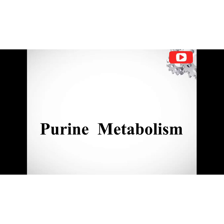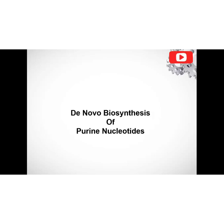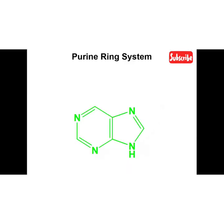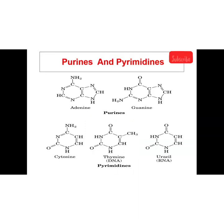Let's look at the biosynthesis of purine nucleotides via the de novo pathway. This is the core structure of the purine ring — you can see there are about four nitrogen atoms while the rest are carbons. There is a bicyclic ring structure, and this ring is contributed by various molecules which we are going to look at in this lecture.